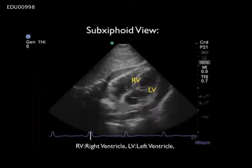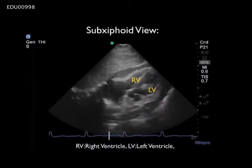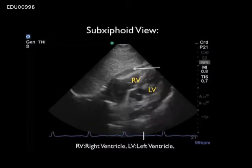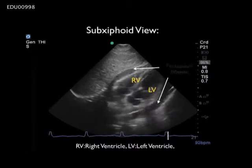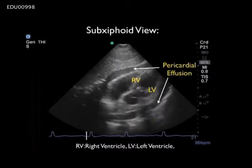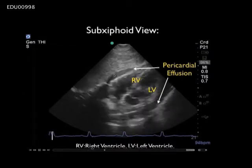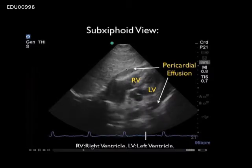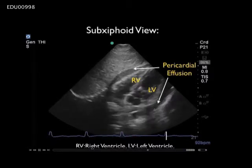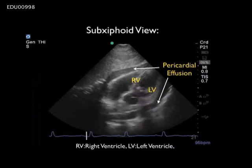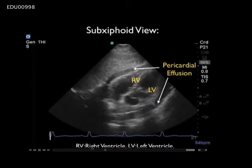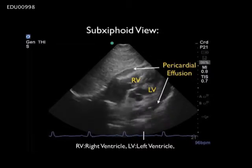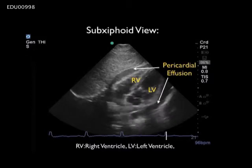Here's another subxiphoid view taken from a hypotensive patient and right away we notice a positive finding. We see the right ventricle anterior and the left ventricle posterior, and there is an anechoic or dark fluid collection layering out around the heart circumferentially — a pretty large circumferential pericardial effusion surrounding both the near-field and posterior aspect of the heart just above the posterior pericardial reflection.